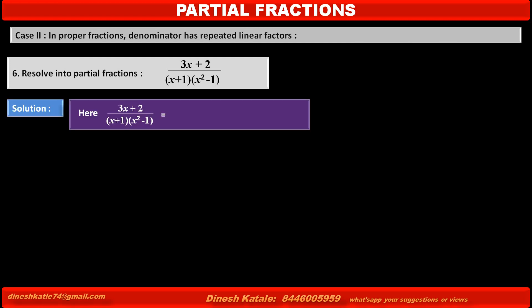Here, in the given fraction (3x + 2) upon (x + 1)(x² - 1), the factor x² - 1 can be factorized as (x + 1)(x - 1). So the expression equals (3x + 2) upon (x + 1)(x + 1)(x - 1), which becomes (3x + 2) upon (x + 1)² into (x - 1).